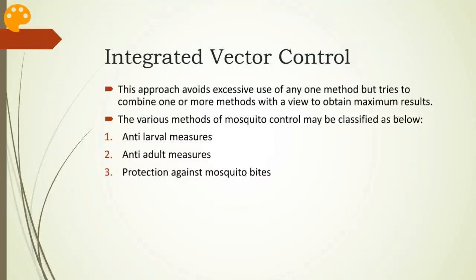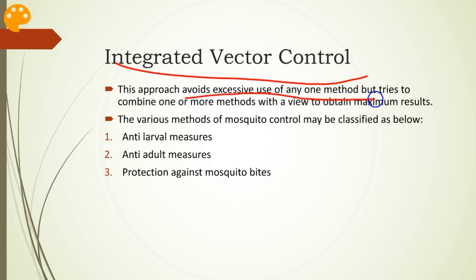Today we learned something about integrated vector control. There are many methods of mosquito control, and experts now recommend an integrated approach — one which avoids excessive use of any one method but tries to combine one or more methods to obtain maximum results. This will reduce the input, prevent environmental pollution caused by toxic chemicals and insecticides, and also reduce the development of insecticide resistance.